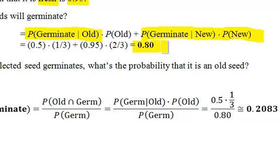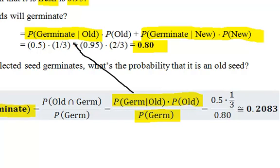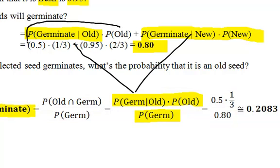So, this is total law of probability from the previous section. Probability old given germinate will be - on the bottom is the probability of germinate, which you already did in part A. And on the top is just the reverse conditional of one of the two cases. You looked at two cases above, so you're really just looking at the probability of this case over the total probability. So, it's just a ratio again. So, that's what Bayes' theorem is.